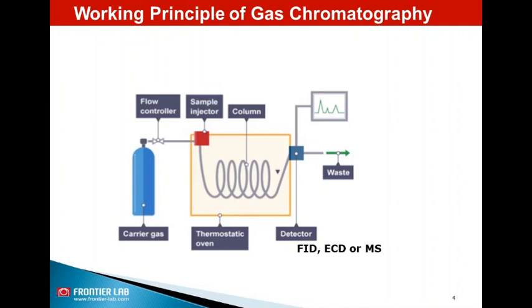There is a flow controller that allows you to look at the tank capacity. Also, you can set the flow rate for the instrument. Then, this is the injection port where the sample is injected. This injection port is set at high temperature that will allow the sample to get volatilized. Then, it will be pushed to the column by the carrier gas.